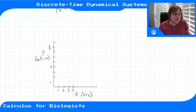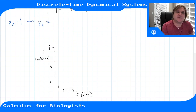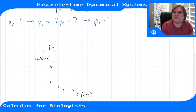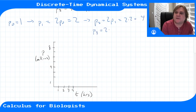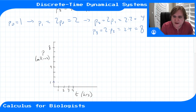Let's say we start with p0 = 1 million. Our discrete time dynamical system says p1 = 2 × p0 = 2. Then p2 = 2 × p1 = 4, and p3 = 2 × p2 = 8. We just step through by applying the update function over and over: starting at 1 million, after one hour we're at 2 million, after two hours 4 million, after three hours 8 million.